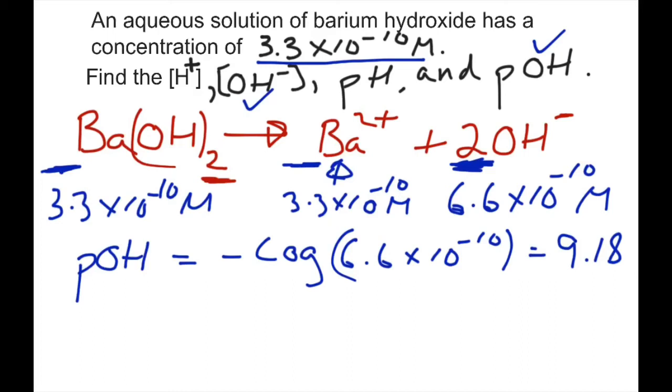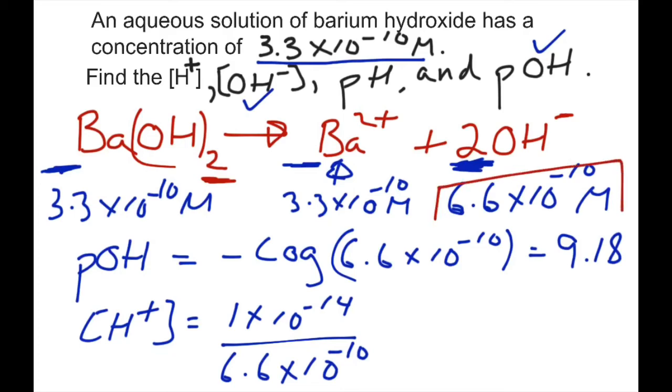We move on. If you know your OH minus, you can determine H plus. And how we do that, we use the KW expression. We simply say H plus is equal to 1 times 10 to the negative 14, divided by what? Divided by 6.6 times 10 to the negative 10. Where did I get 6.6 times 10 to the negative 10 from? That's our guy right here. That's our OH minus concentration. And when we do that division, we should get around 1.51 times 10 to the negative 5 for our H plus concentration.